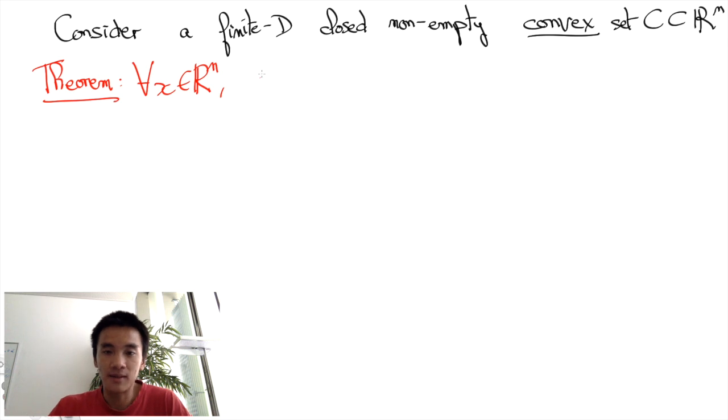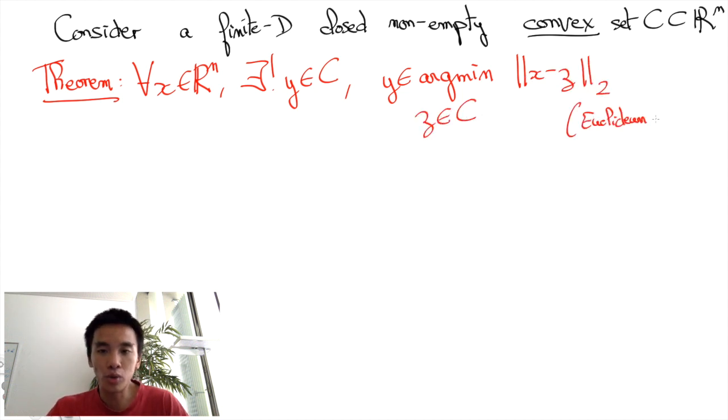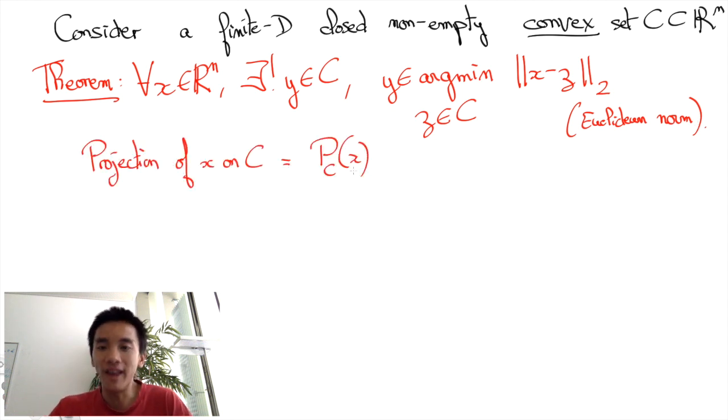Then there exists a single point Y in C that minimizes the Euclidean distance between X and C, i.e., the norm 2 of X minus Y. This point is called the projection PC of X on C.